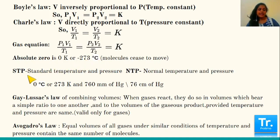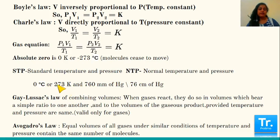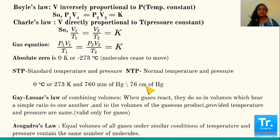STP or NTP stands for standard temperature and pressure, or normal temperature and pressure. The values are 0 degrees Celsius or 273 Kelvin. When calculating mathematically, we always take temperature in Kelvin, so we must convert Celsius to Kelvin. The standard pressure is 760 mm of Hg or 76 cm — that is the height of mercury used to measure pressure.